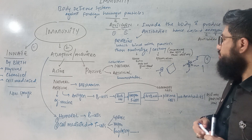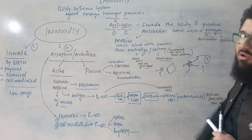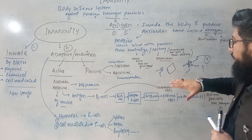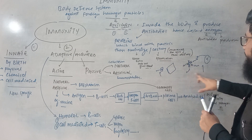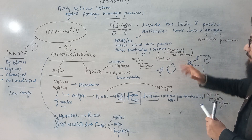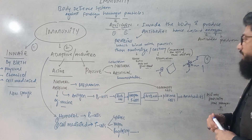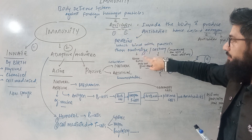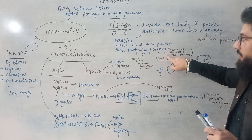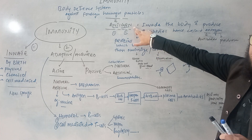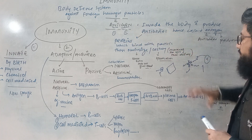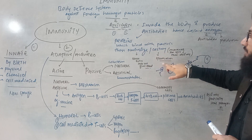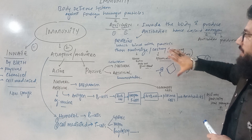To summarize: antibodies are proteins that either block or destroy antigens. They block by neutralization — covering the particle so it cannot enter the cell — and they destroy by opsonization — marking the antigen so other cells can find and kill it.